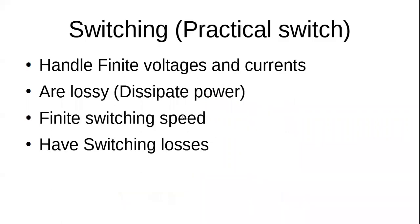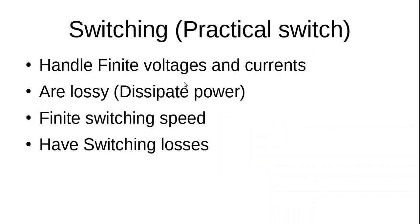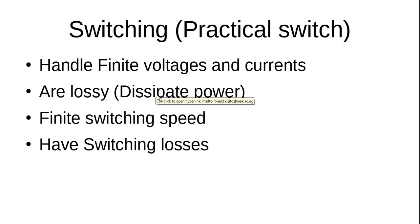In practice, the switch we end up with is lossy — we always dissipate some power. The reason is that even when the switch is off, especially electronic switches, you have a small amount of current flowing. So you have a voltage and a current at the same time, giving some power dissipation. For example, a diode that is off still has a small leakage current — small but not zero. That leakage current times the voltage across the diode terminals gives some power dissipation.